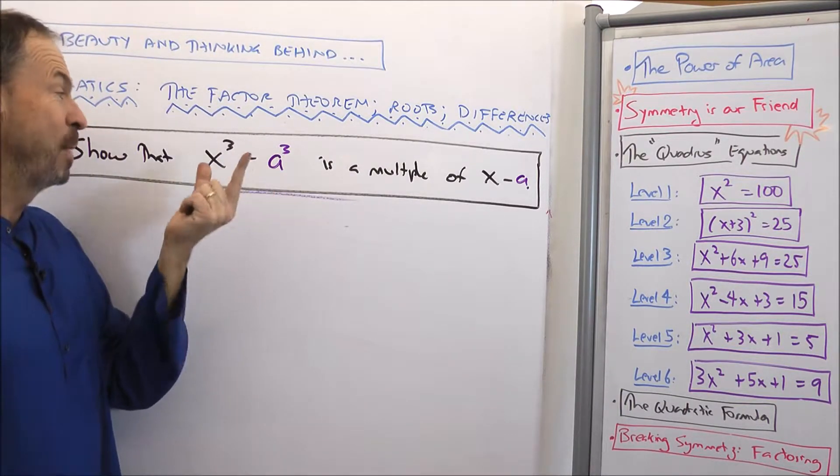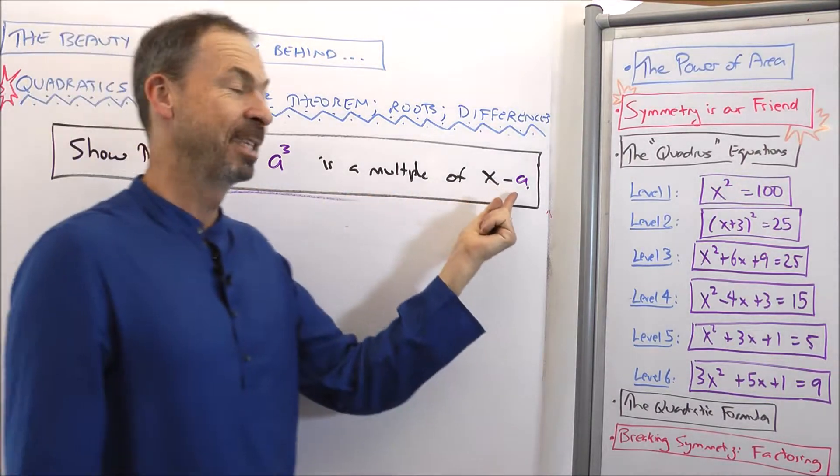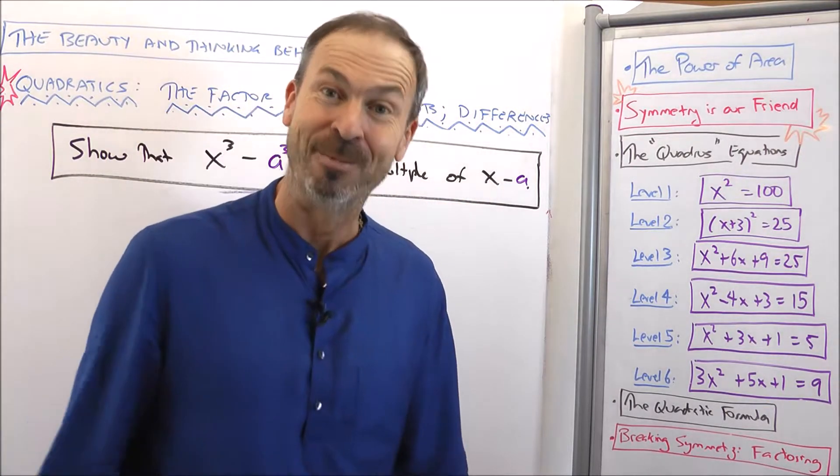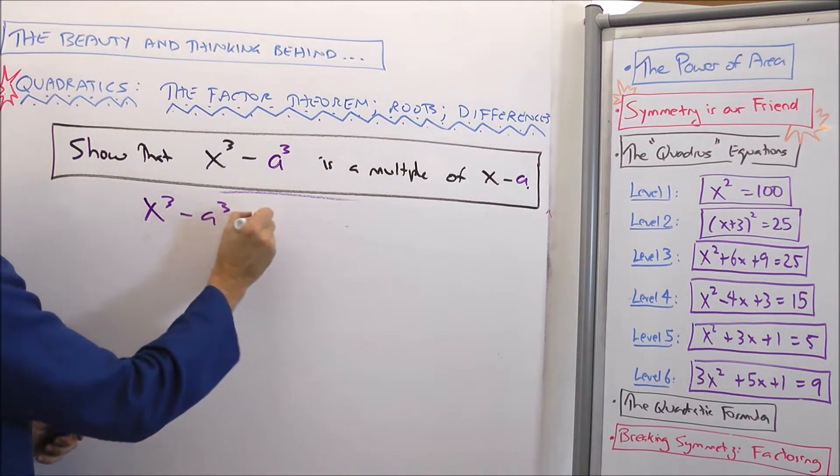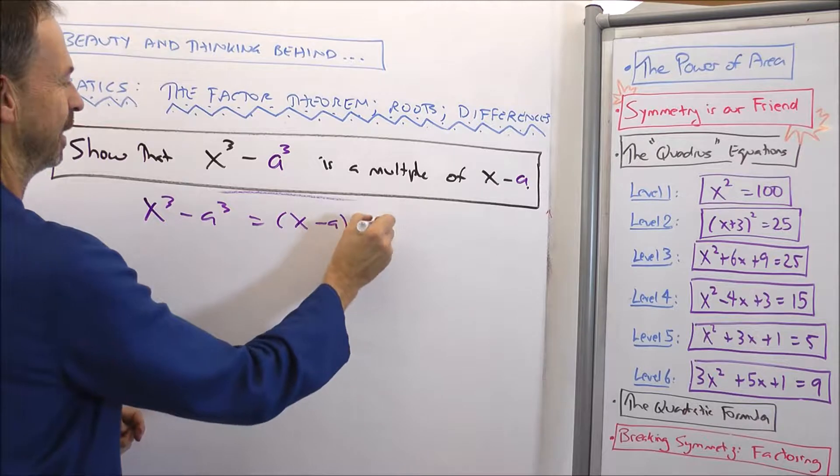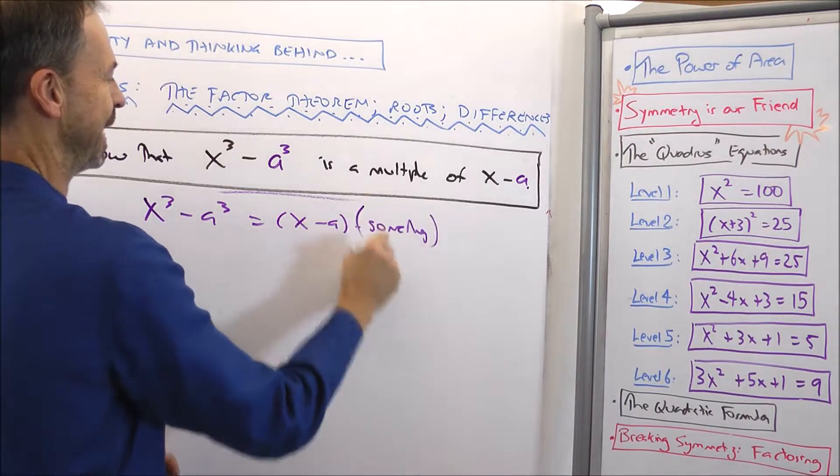which means it's a multiple of x minus a with 0 error. It's a multiple of x minus a. So this proves that x³ minus a³ is (x minus a) times something. Done.